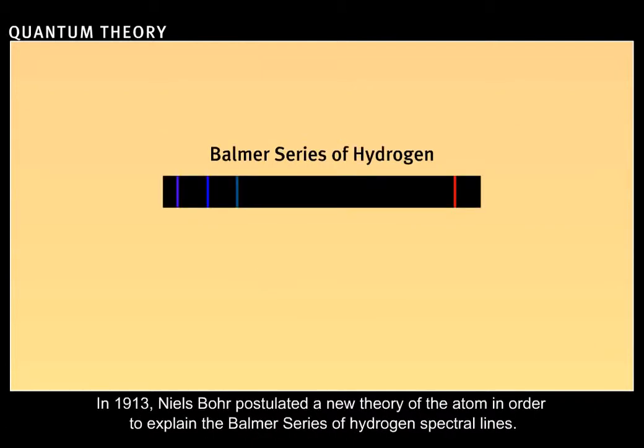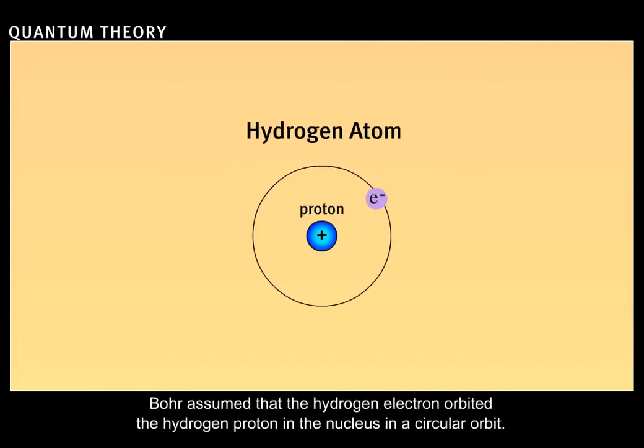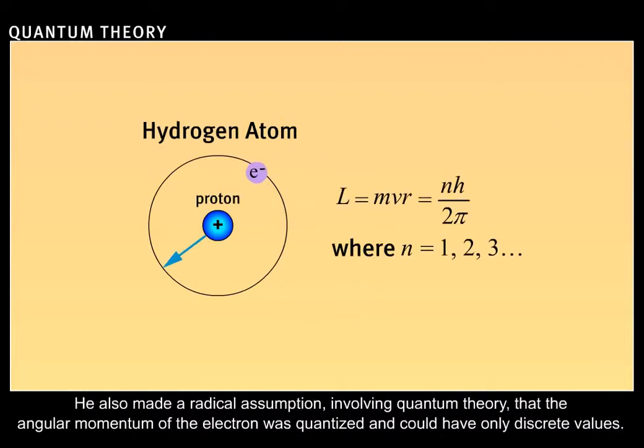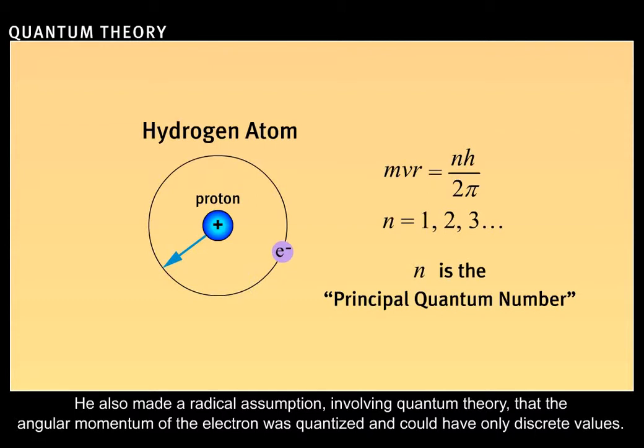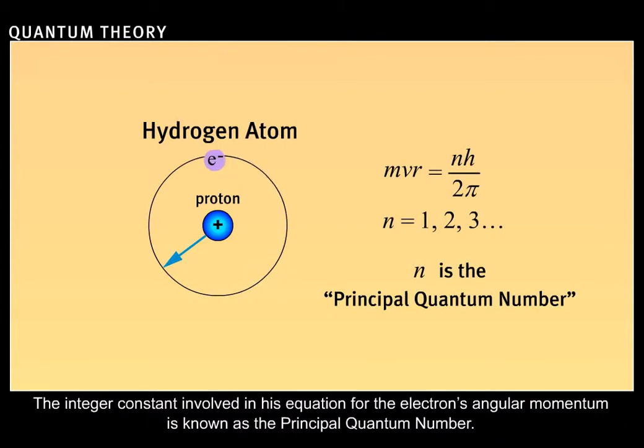In 1913, Niels Bohr postulated a new theory of the atom in order to explain the Balmer series of hydrogen spectral lines. Bohr assumed that the hydrogen electron orbited the hydrogen proton in the nucleus in a circular orbit. He also made a radical assumption involving quantum theory that the angular momentum of the electron was quantized and could have only discrete values. The integer constant involved in his equation for the electron's angular momentum is known as the principal quantum number.